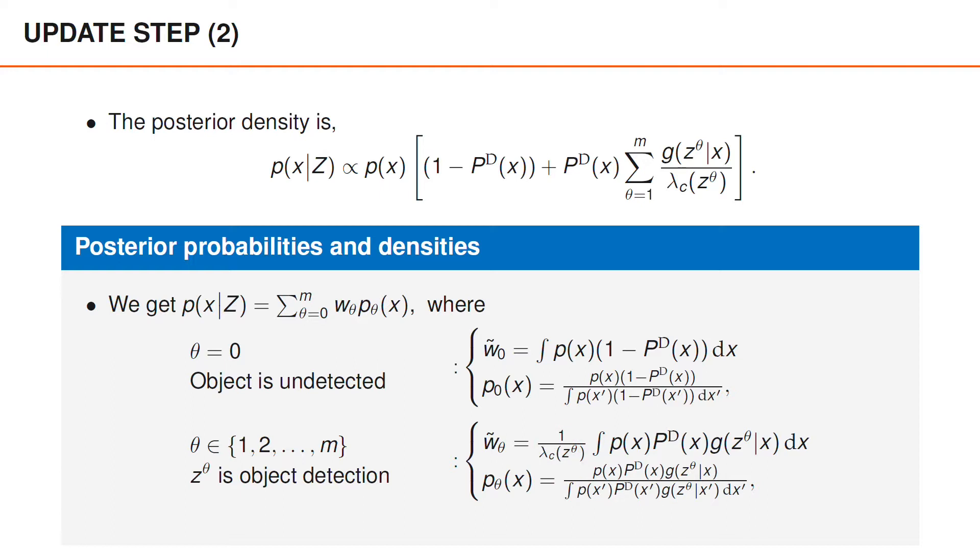To obtain the weight for one of those hypotheses, we simply compute the integral of that function, where we note that λ_c does not depend on X and can therefore be extracted out from the integral. To obtain the density p_θ(x) for a hypothesis stating that the object is detected, we take the original function and normalize it by its integral.